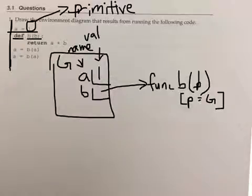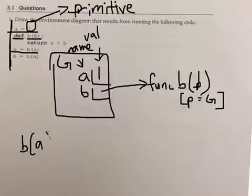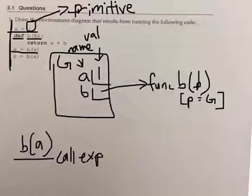So now we have a third line: A equals B of A. Again it is an assignment, but this time B of A is a more involved expression. It's a call expression. So then we have to evaluate the operator and the operands. So what is the operator?